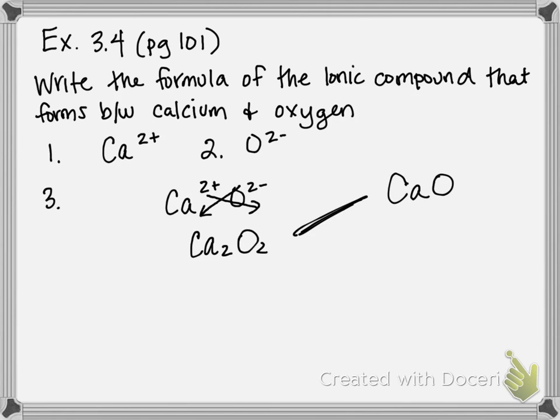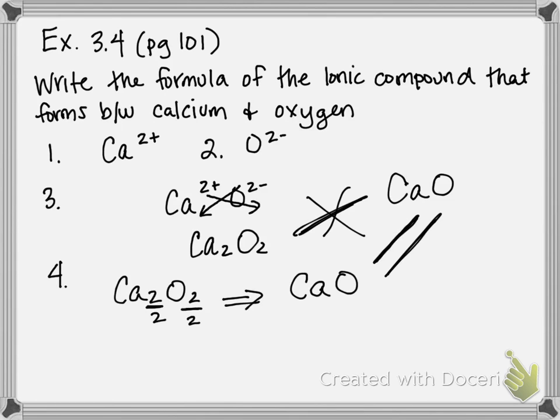Step 4 is when, if we need to, we reduce subscripts so that they're the smallest whole number ratio. So Ca₂O₂, since both of those are 2, we divide them by 2 so that they become CaO. And now, these two are equal to one another.